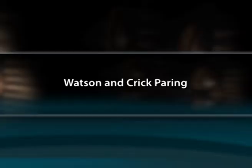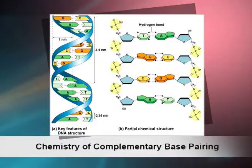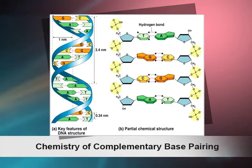Watson-Crick base pairing: The orientation of the Watson-Crick model of DNA is anti-parallel — their 5' to 3' directions are opposite. The members of each base pair can fit together within the double helix only if the two strands are anti-parallel. A consequence of these base pairing requirements is that each strand of a DNA molecule contains a sequence of nucleotides that is exactly complementary to the nucleotide sequence of its partner strand. Adenine is paired with thymine through two hydrogen bonds, and guanine is paired with cytosine through three hydrogen bonds.